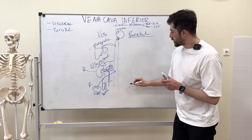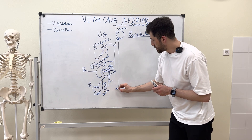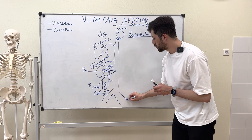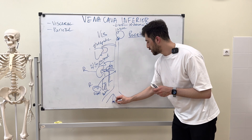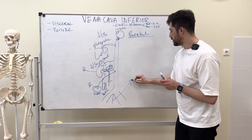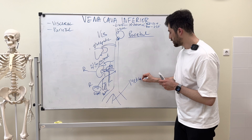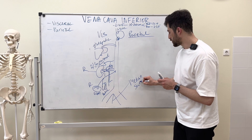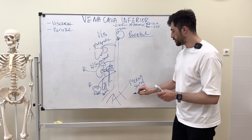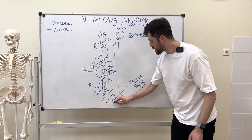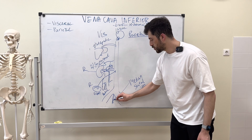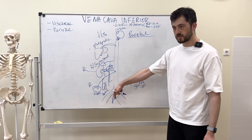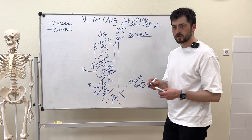Starting from the lowest parietal branch: the median sacral vein. If you remember, there is an artery with the same name — the median sacral artery. This vein is the parietal equivalent.